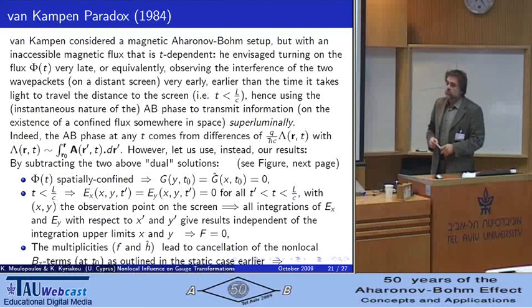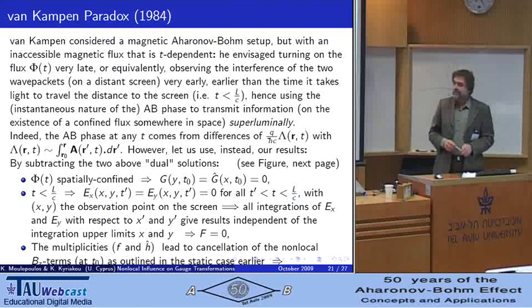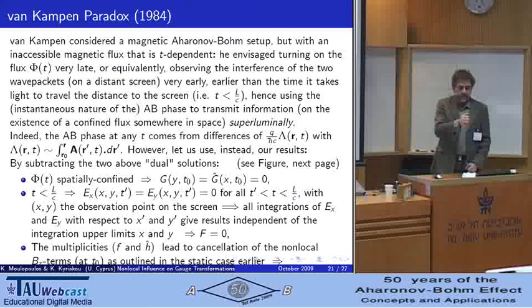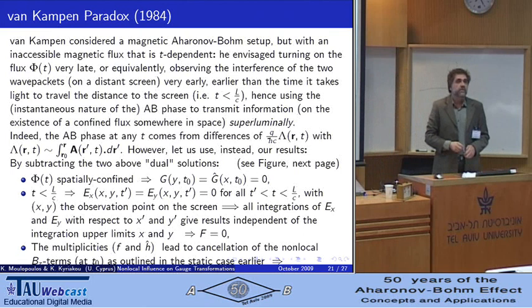Van Kampen suggested that we could use the Aharonov-Bohm effect to transmit information about the existence of a magnetic flux somewhere in space, superluminally, by violating the relativistic causality, because we can wait and keep the flux off, and we can wait until the two wave packets hit the screen, and just before they hit the screen, we turn on the flux. Then it's true that we have a time-dependent Aharonov-Bohm phase there, and one could transmit this information.